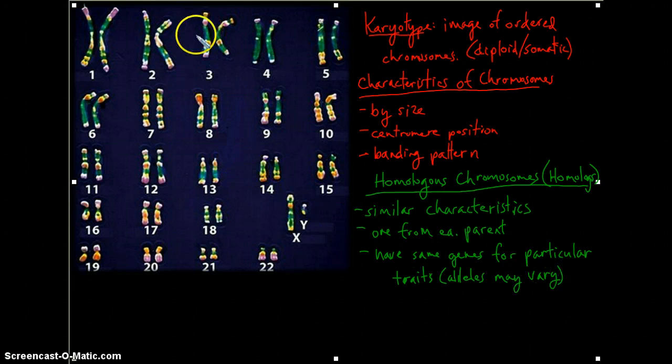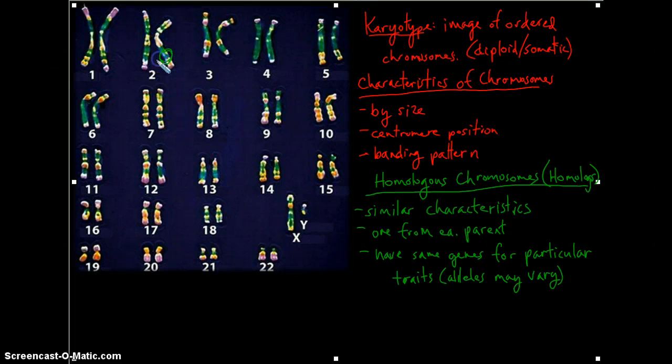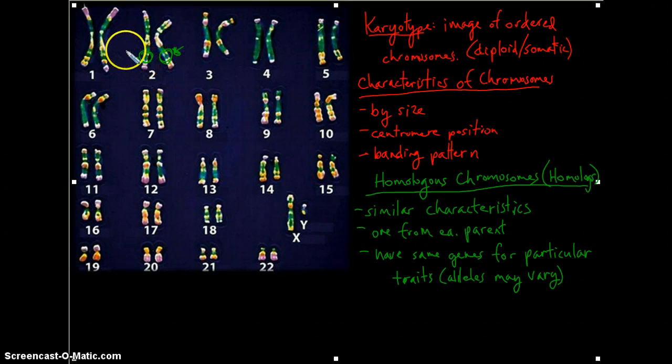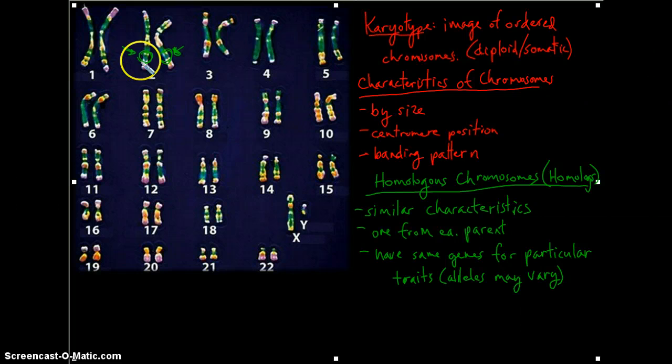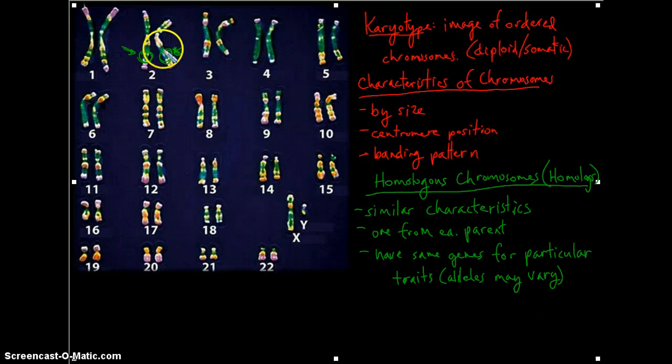Because remember, you're getting this information from different parents. So let's say this is the locus or location for a gene for hair color. Well, one parent may have passed on an allele for darker hair, and the other parent may have passed on an allele for lighter hair. The allele for hair color is at the same locus or location on both chromosomes, but the particular allele that is inherited may differ by parent.